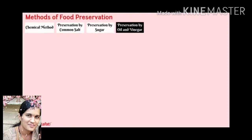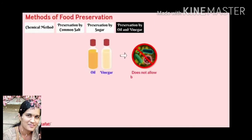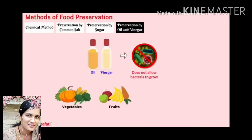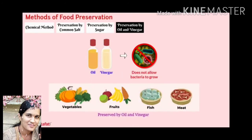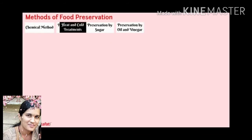Preservation by oil and vinegar: oil and vinegar do not allow bacteria to grow. So some vegetables, fruits, fish and meat are covered with oil or vinegar to avoid the growth of microorganisms.